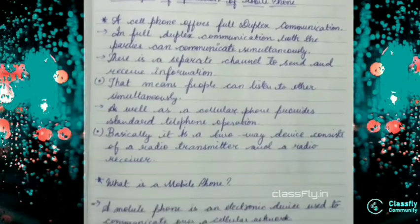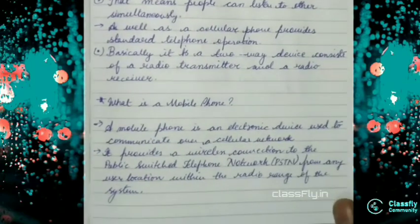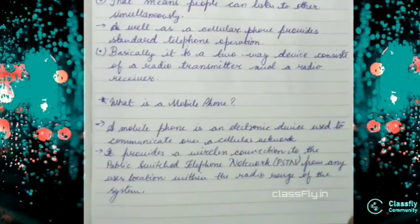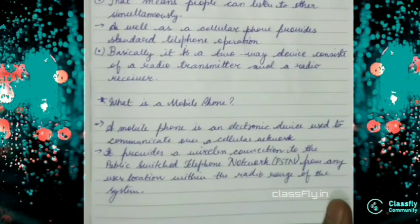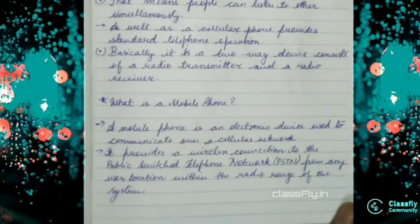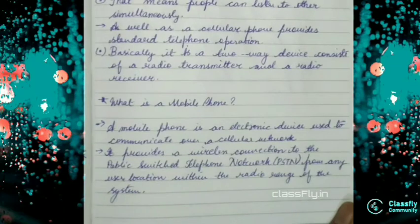Now we will know what we are knowing now about this cell phone and its duplex communication, but do we know what mobile phone is? So the next part is what is a mobile phone? See a mobile phone is an electronic device used to communicate over a cellular network. That means mobile phone is used for communication to any part of the country or any place and it will be done with the help of a cellular network. Mobile phone provides a wireless connection.